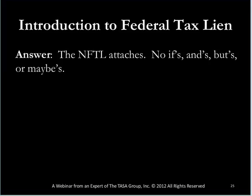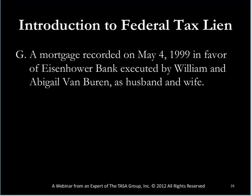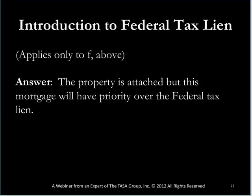Example G ties into Example F. Since William and Abigail owned that property, at the time they purchased it in 1999, they also gave a mortgage to the Eisenhower Bank in exchange for the loan to purchase the property. That mortgage was recorded at the time of closing in May of 1999. The significance is that the mortgage is in a priority position over the federal tax lien. This example applies only to F above, because they clearly owned the property before the lien was recorded.